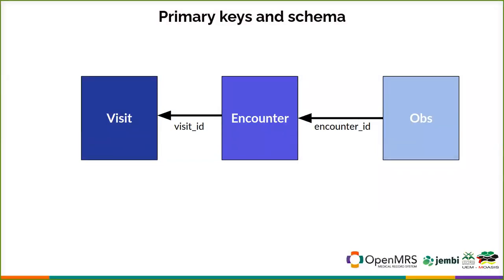In terms of the primary keys, observations are linked to encounters through encounter ID. An encounter is connected to a visit through a visit ID. It is possible to have observations without an encounter, and likewise it's possible to have an encounter without a visit, but those things are fairly rare. The model allows for that.